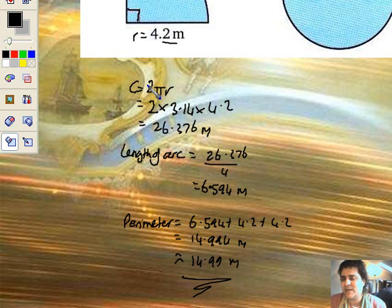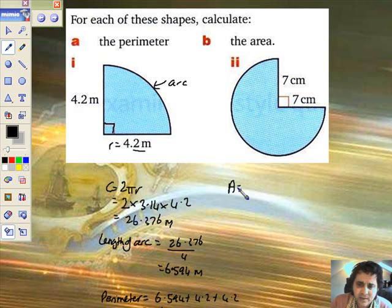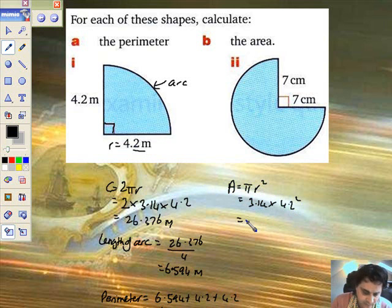Now, in terms of its area, it's clearly a quarter of a circle. So let's just put the formula here. A equals pi times radius squared. Put it in. 3.14 times 4.2 squared. Let's get an answer straight away. 3.14 times 4.2 times 4.2. Listen to how I do it. Then you won't make a mistake. So 55.3896. Now, that's for the entire circle.